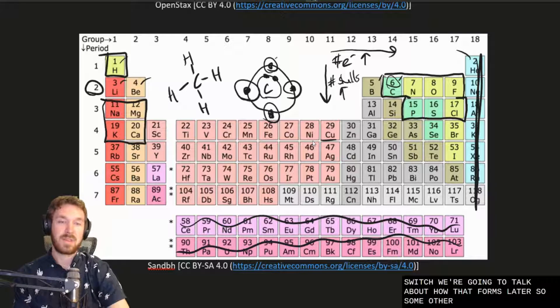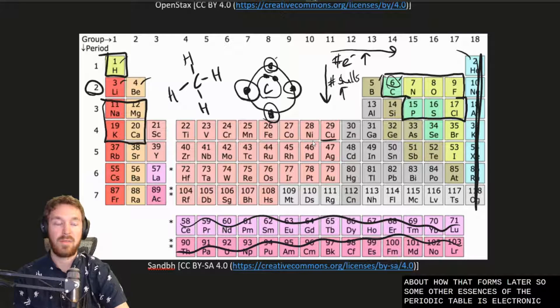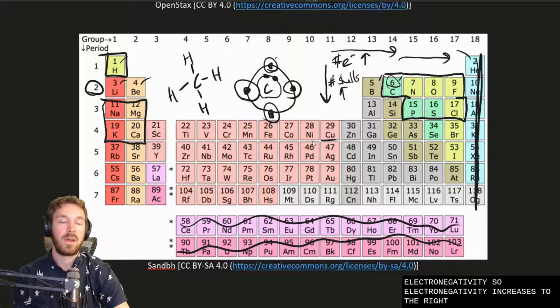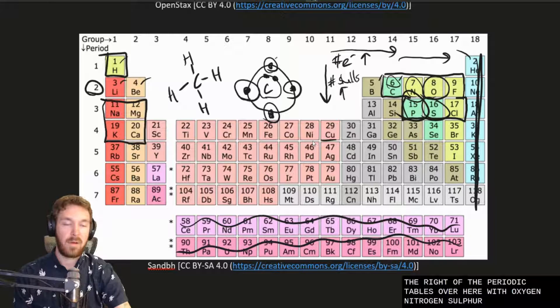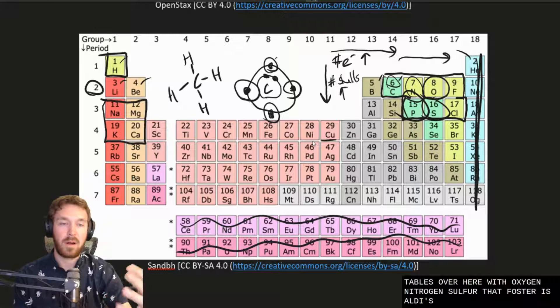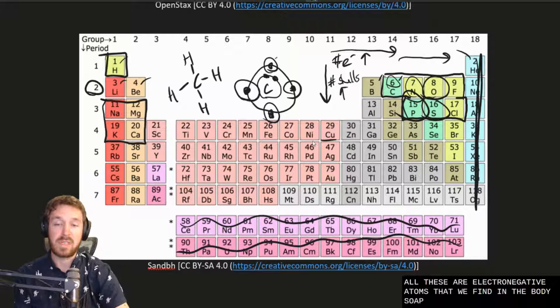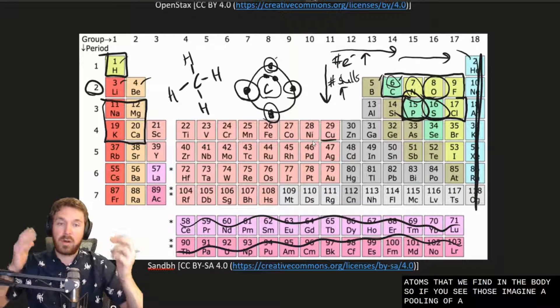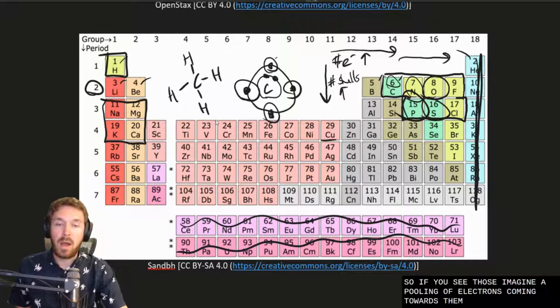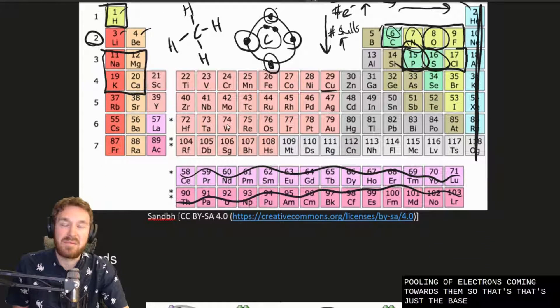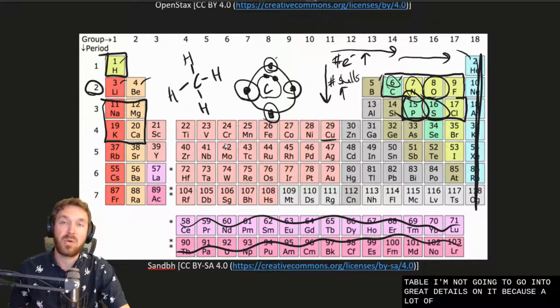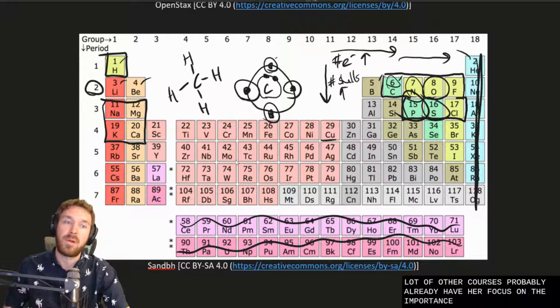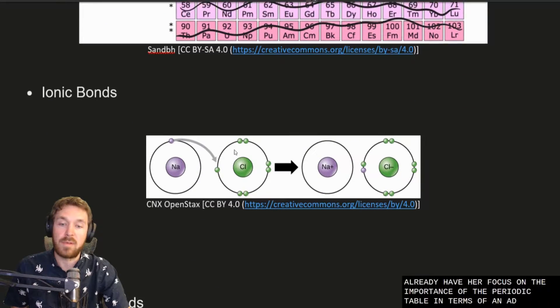So some other essences of the periodic table is electronegativity. So electronegativity increases to the right of the periodic table. So over here with oxygen, nitrogen, sulfur, phosphorus, all these are electronegative atoms that we find in the body. So if you see those imagine a pooling of electrons coming towards them. All right, so that's just the basics of the periodic table. I'm not going to go into great details on it because a lot of other courses probably already have. We're focused on the importance of the periodic table in terms of anatomy and physiology.